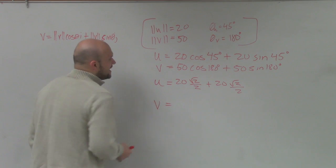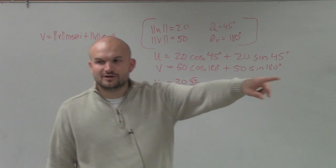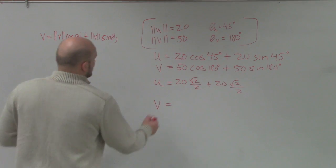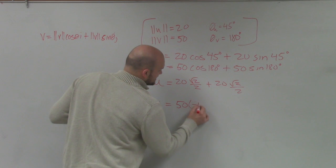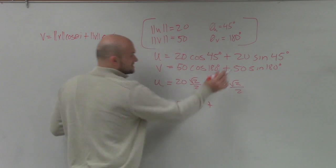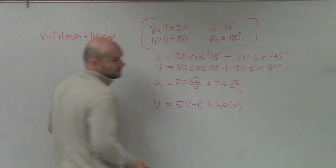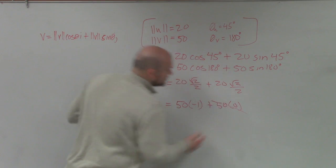v, I can simplify. Cosine of 180 degrees, negative 1. Very good. So that's going to be 50 times negative 1, plus the sine of 180 degrees, 0. So we know obviously that's going to be done, right?